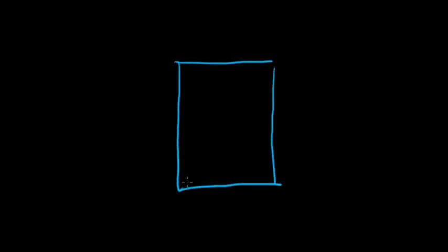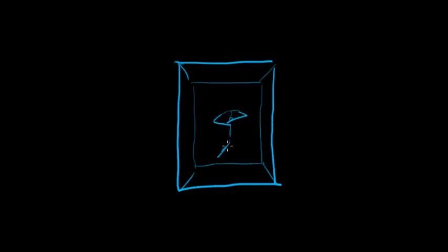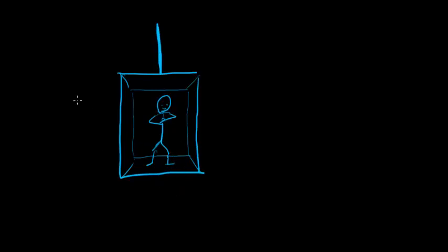A very common example involving acceleration is an elevator. Imagine this elevator being held by a cable and standing still. The scenario is not much different from the apple. All we need to consider is the weight, and the tension in the cable is simply equal to the opposite of the weight — same magnitude, opposite direction. That would be the tension in the cable.